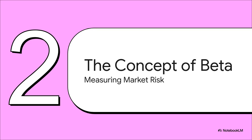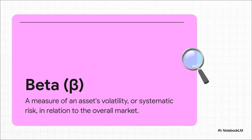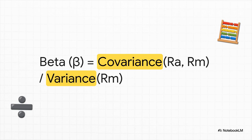What exactly is beta, and how does it actually measure this market risk we're talking about? Put simply, beta tells us how much we can expect an investment to move relative to the market's own movements. It's a measure of its sensitivity to the market as a whole. The formula: beta is the covariance of the asset and the market, divided by the variance of the market. In simple terms, covariance measures how two things tend to move together, while variance measures how much something moves on its own.